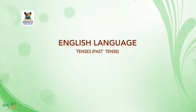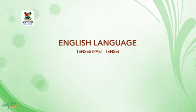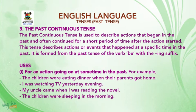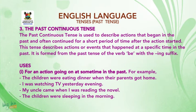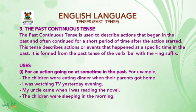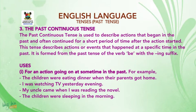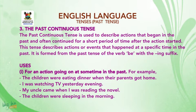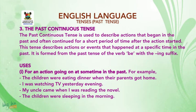Students, you are welcome to the last part of today's lesson. The topic is the Past Tense. Let us continue with the third type, the Past Continuous Tense. It is used to describe actions that began in the past and often continued for a short period of time after the action started. It describes actions or events that happened at a specific time in the past. It is formed with WAS or WERE with the -ing form of the verb.